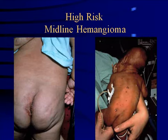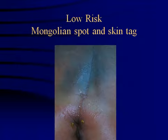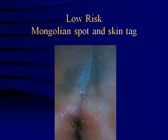Here are examples of high risk midline lesions. And this is a low risk lesion with a Mongolian spot and skin tag.